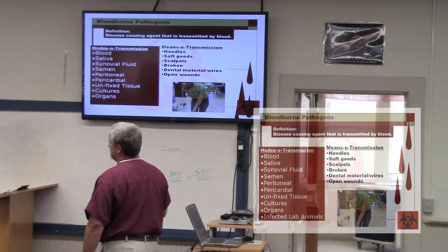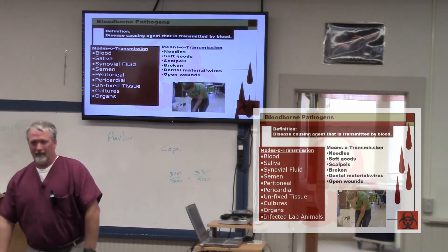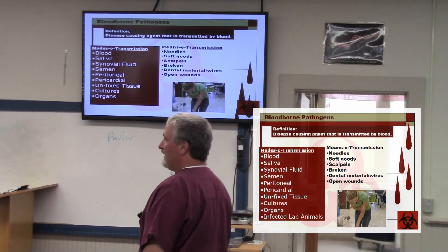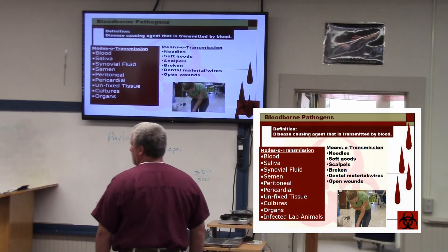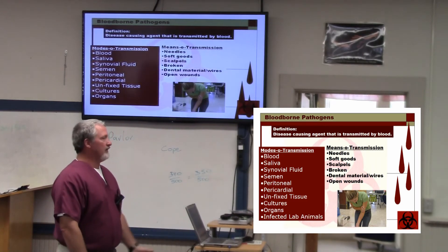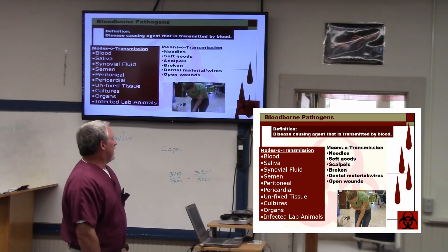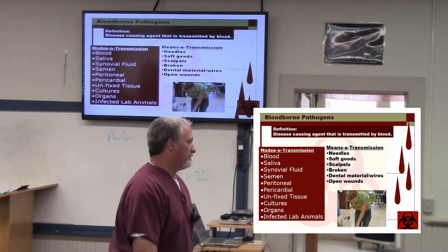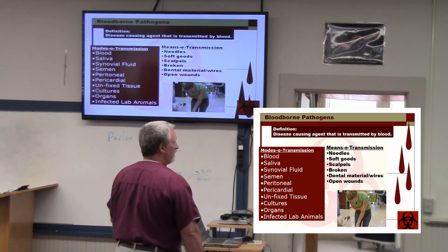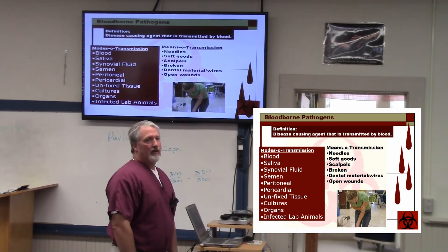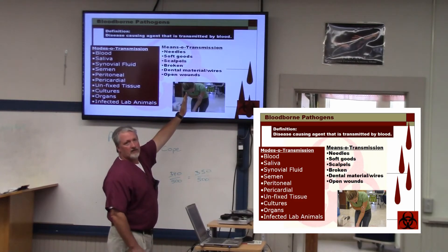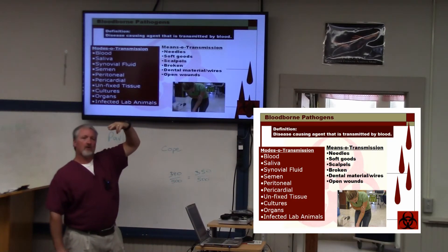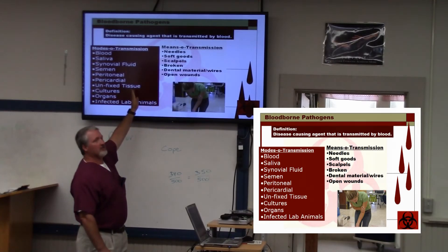Organs — like in a heart transplant or liver transplant — the actual organ itself can be a carrier. And then the last one: infected lab animals or lab animal parts. This is how the pathogen can get from one person to the next — this is what's carrying it, what actually has the pathogen living inside of it.